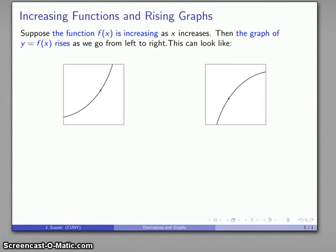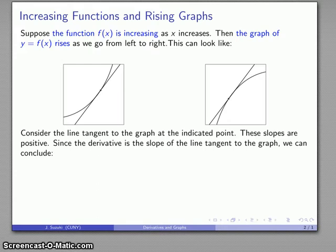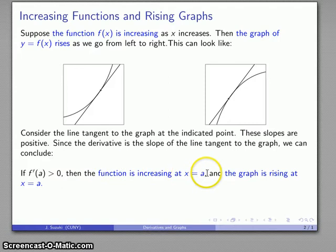What does this have to do with the derivative? The derivative is the slope of the line tangent to the graph. So if we draw those tangent lines at some point on the graph, those tangent lines have a positive slope. And since the derivative is the slope of the tangent line, we can make the following conclusion: if the derivative is positive at some point, then the function is increasing at that point.